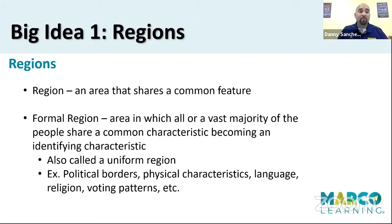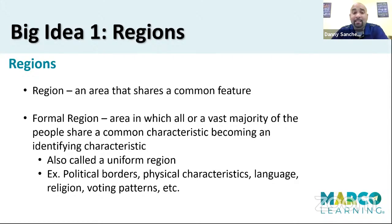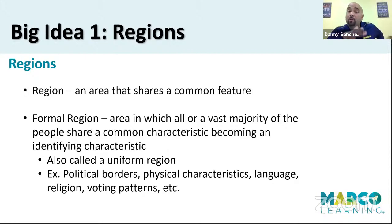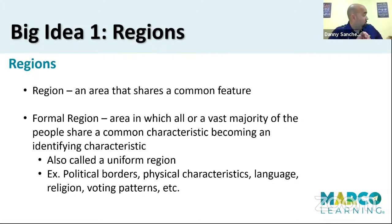I want to now shift to the big ideas. Region: an area that shares a common feature. It's not just one place — it's many places tied together. The first type of region is a formal region: an area in which all or a vast majority of people share a common characteristic, becoming an identifying characteristic. And remember, there are multiple names for a formal region. It's not just the formal region — it can also be called a uniform region. A brain trick I do with my students: if you go to a school where everybody wears a uniform, the point is that everybody looks the same — it's such a common characteristic that everybody has the same thing going on.